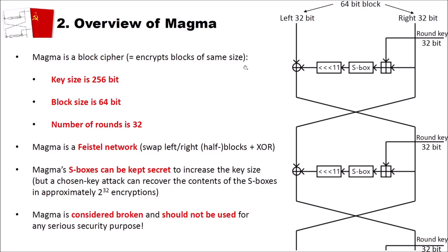On the right side you can see a high-level overview of the Magma cipher. When you input a 64-bit plain or cipher text block, as with all Feistel networks it is split into two 32-bit parts: a left part and a right part. The left part is XORed with the result of an F-function. Then the left part becomes the right part, and the right part falls through the round to become the new left part. We have 32 of these rounds, and the round key for the F-function is 32 bits.